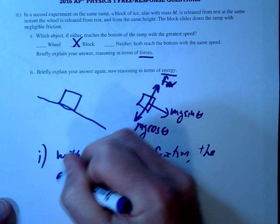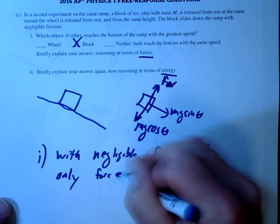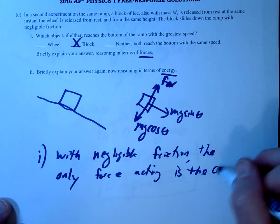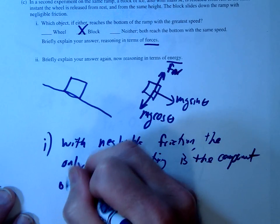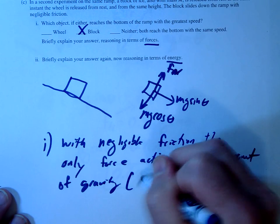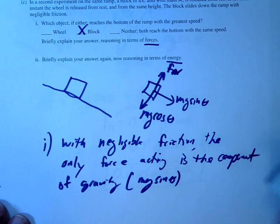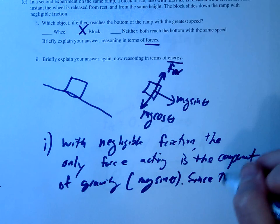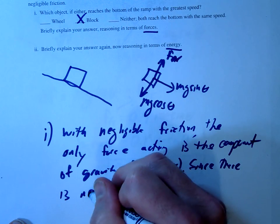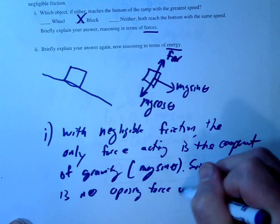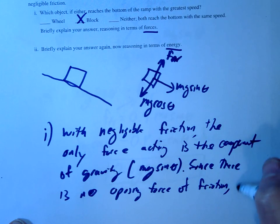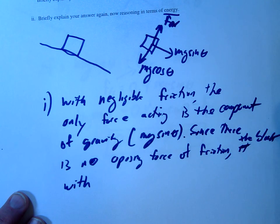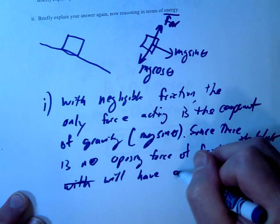So how could we explain it? Well, with negligible friction, the only force acting is the component of gravity, mg sine theta. So since there's no opposing force of friction, it will have a greater acceleration, the block. And therefore a greater V.